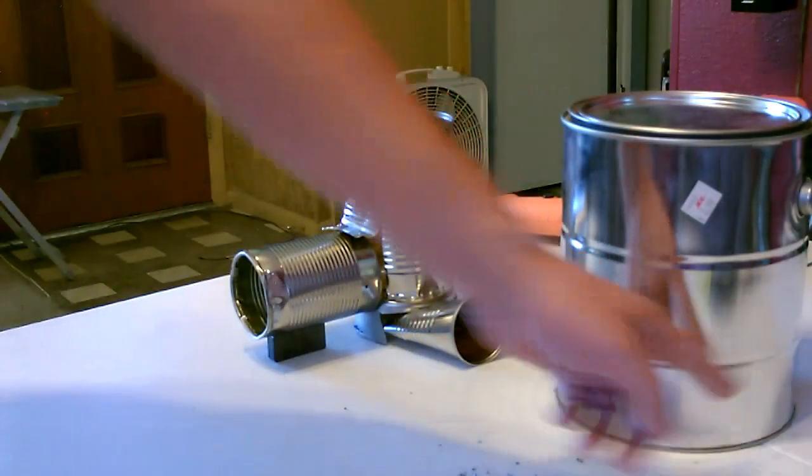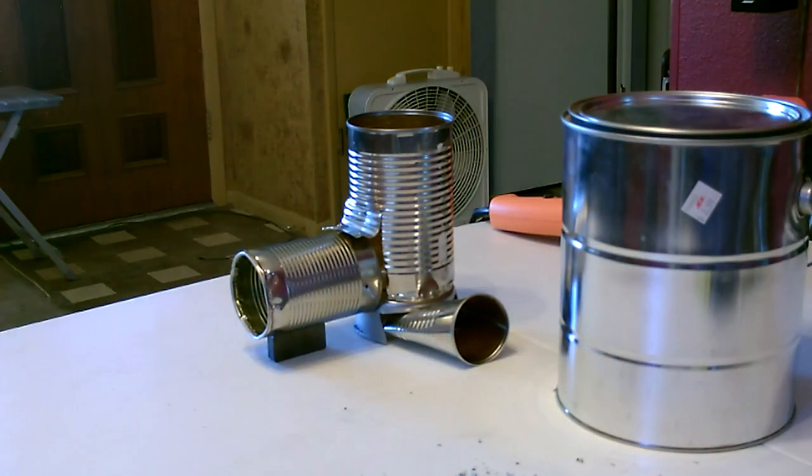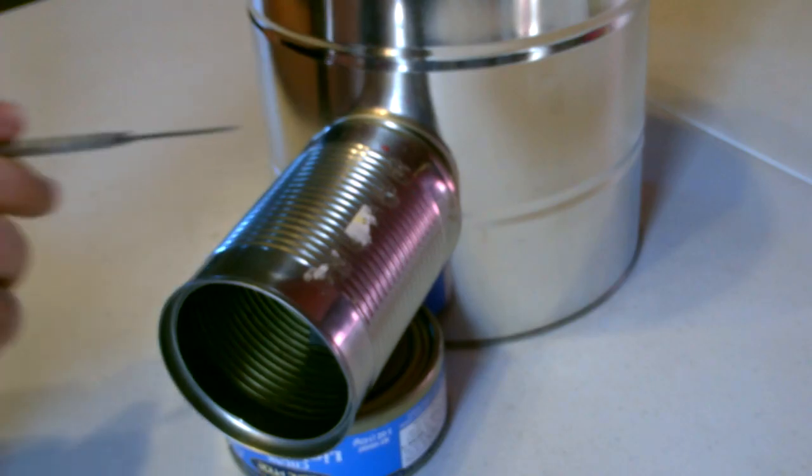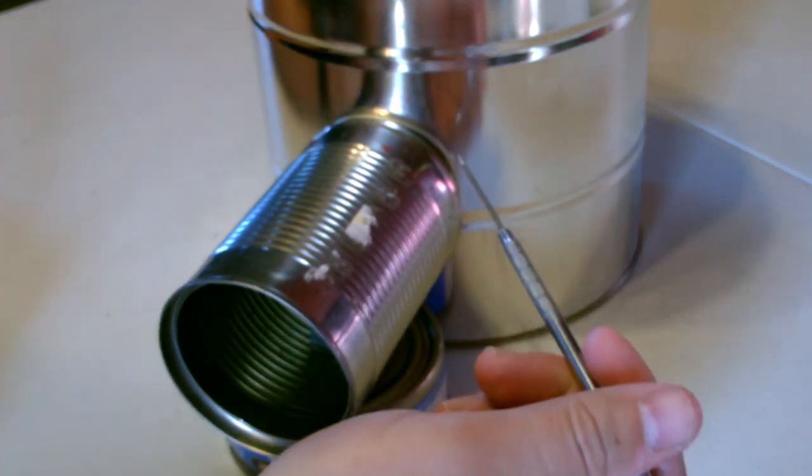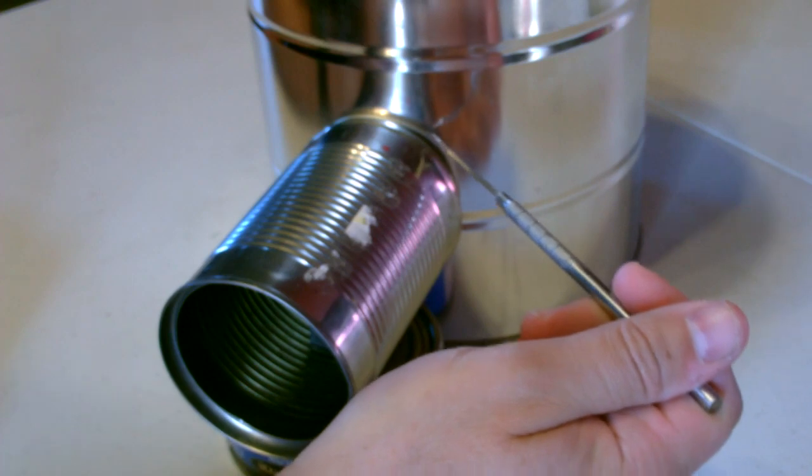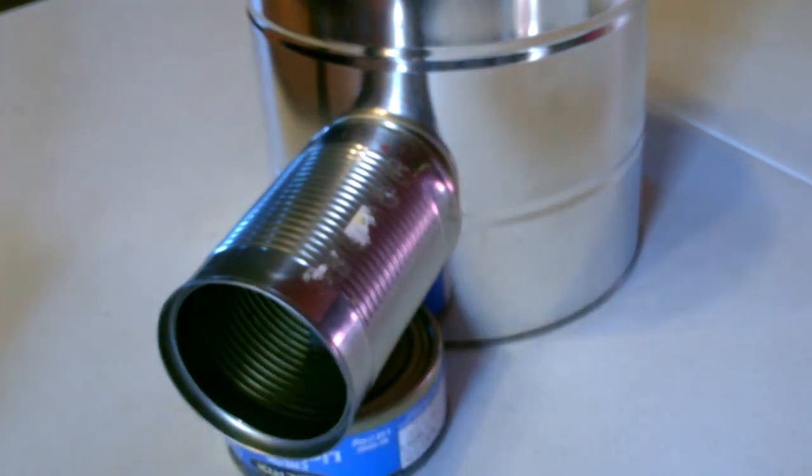Now I just have to drill the holes here and here for the two cans. You want to put the fuel feed tube about this high, the height of the tuna can, so it'll match when we put it all together. Just score the line and we'll cut the hole.